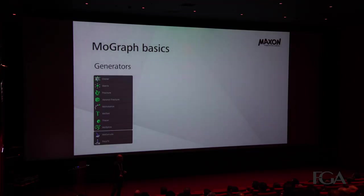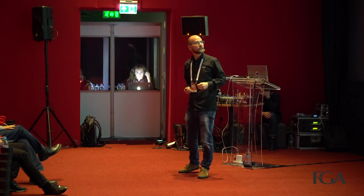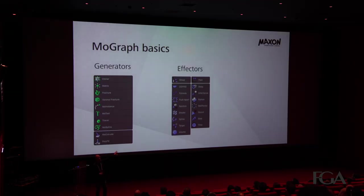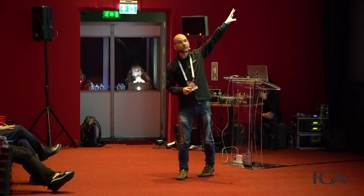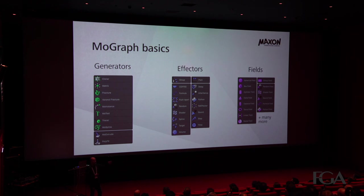The MoGraph basics for those who haven't used MoGraph yet. There are the green objects, which are the generators — the objects that you can create MoGraph clones with. Then we've got the effectors, which are the objects you can use to control the object clones created by the generators. And then we've got the fields, which are like a weighting system all over Cinema 4D. With fields, you can mask the effect of effectors.